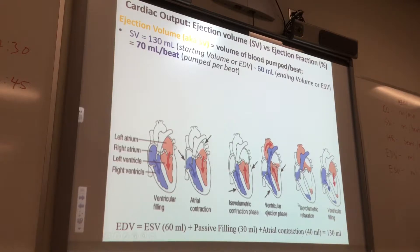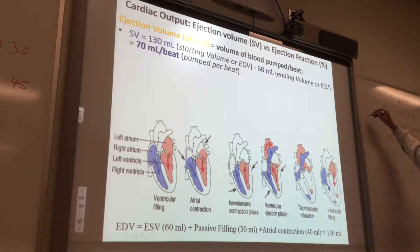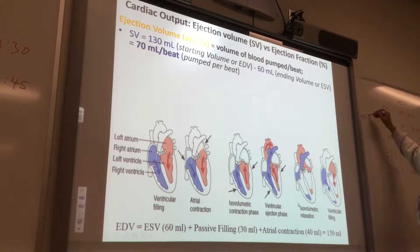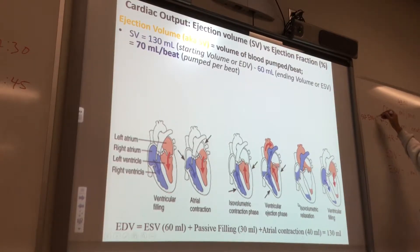You can also say stroke volume equals end-diastolic volume minus end-systolic volume.